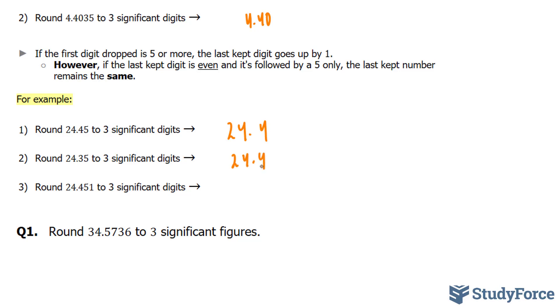Interesting. Let's try one more. Round 24.451 to three significant digits. This time, the 5 and the 1 will be discarded. Now because there's a 1 after the 5 and it's not a 0, then you're going to follow the normal rules.